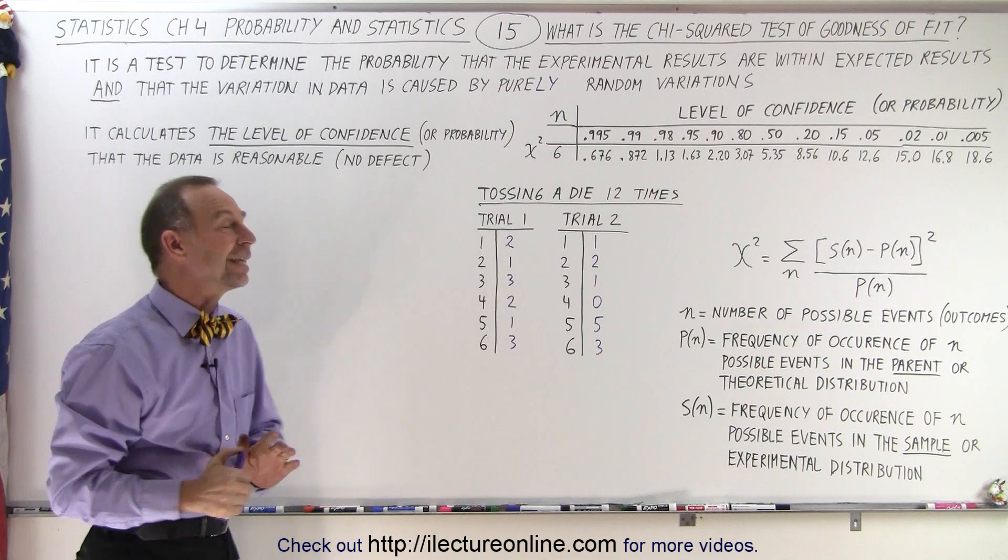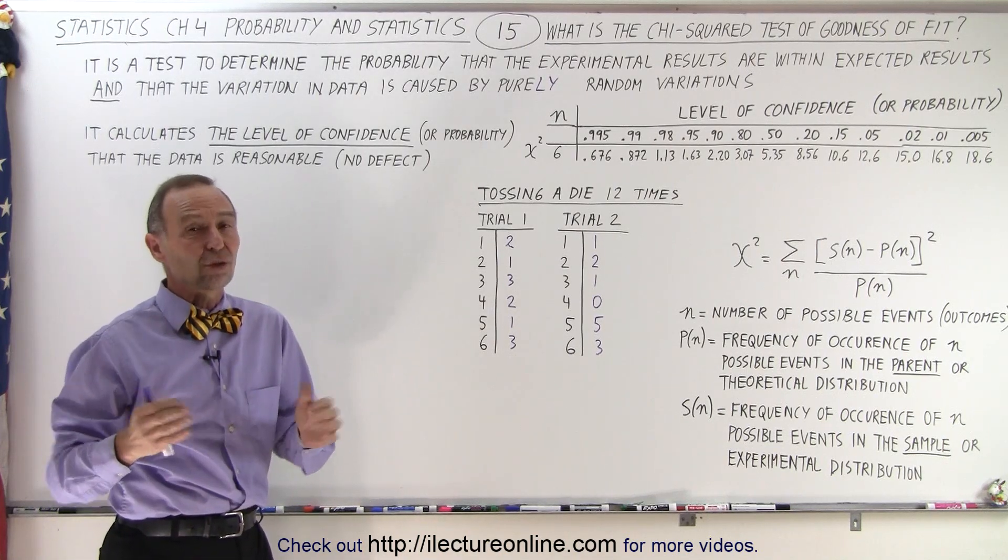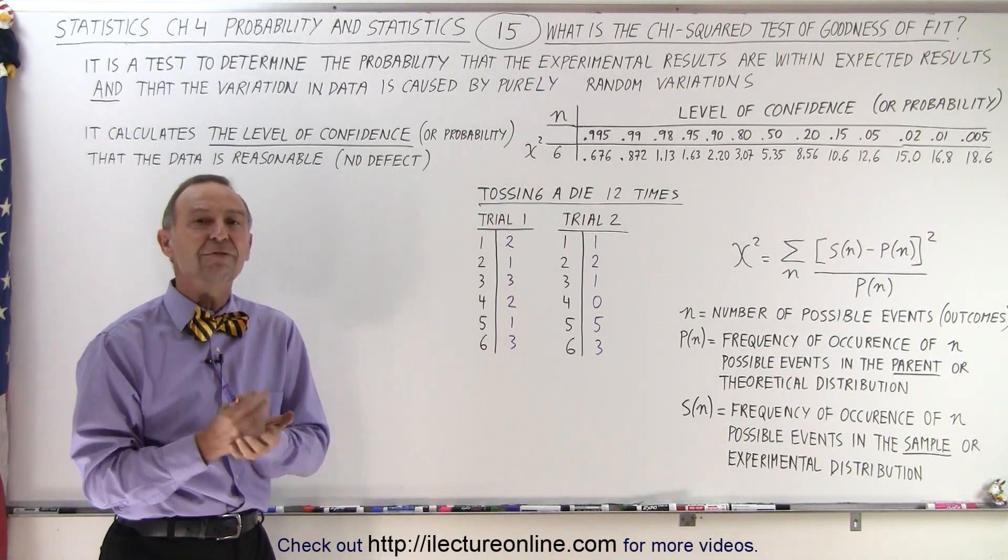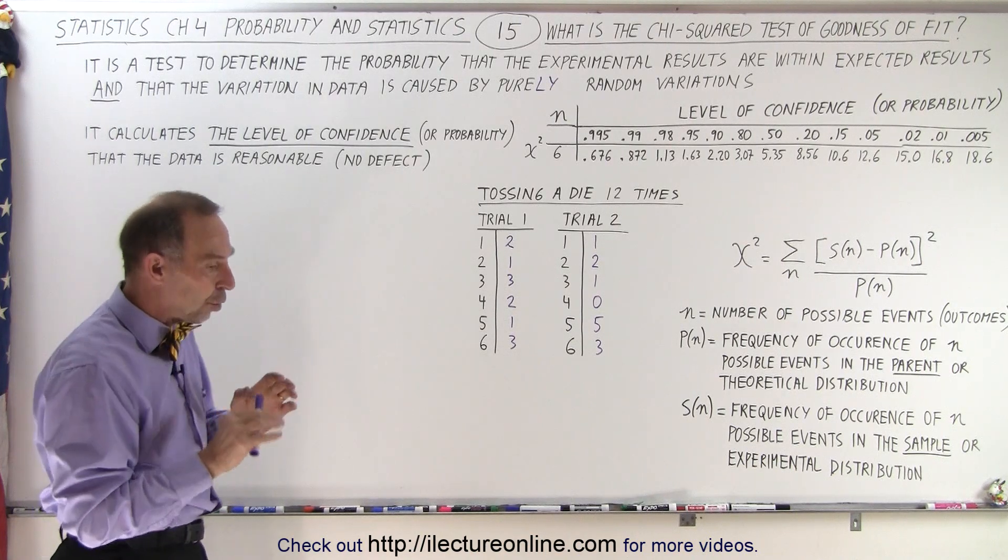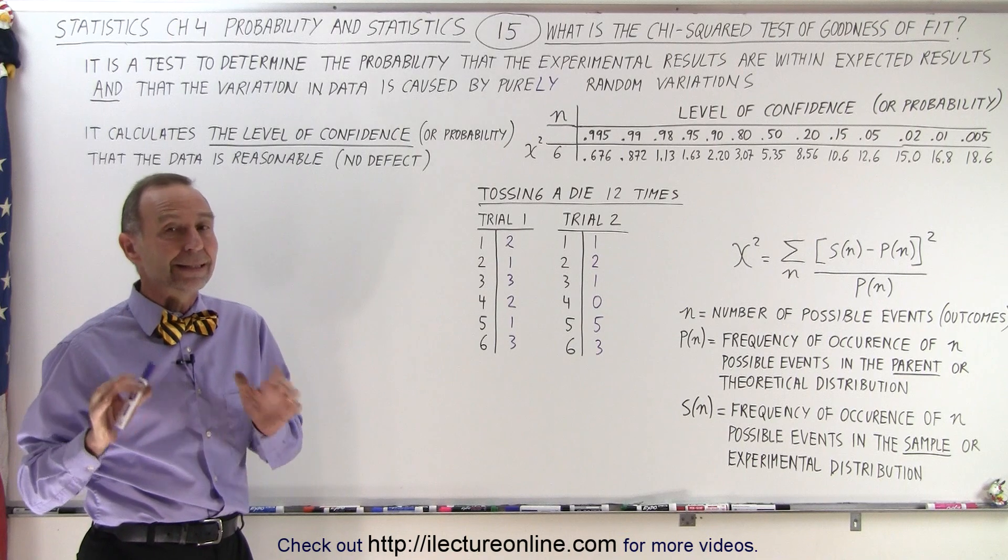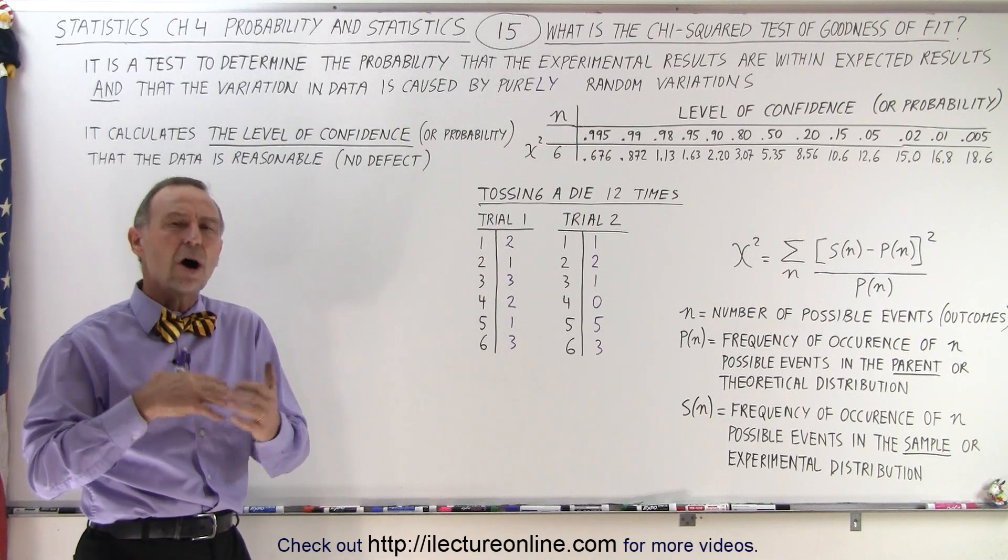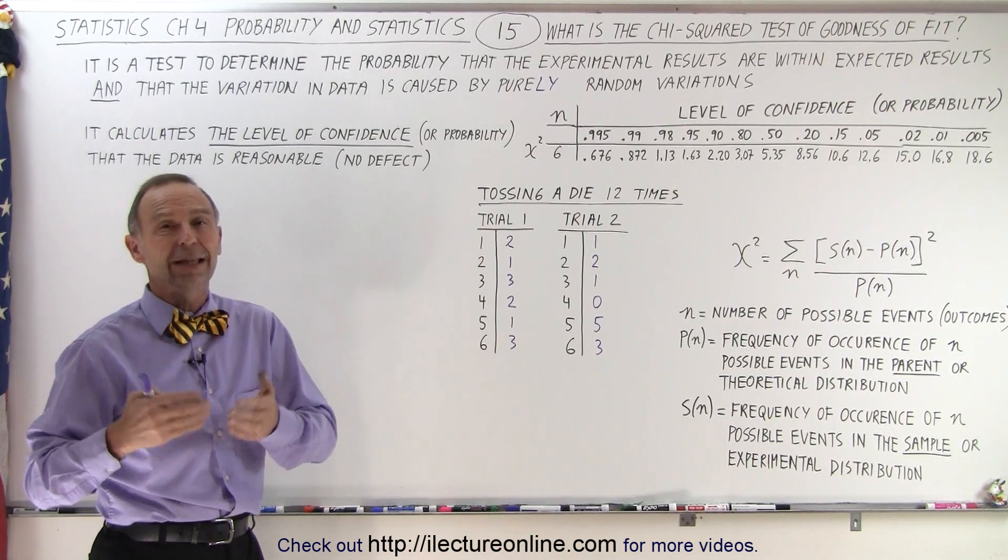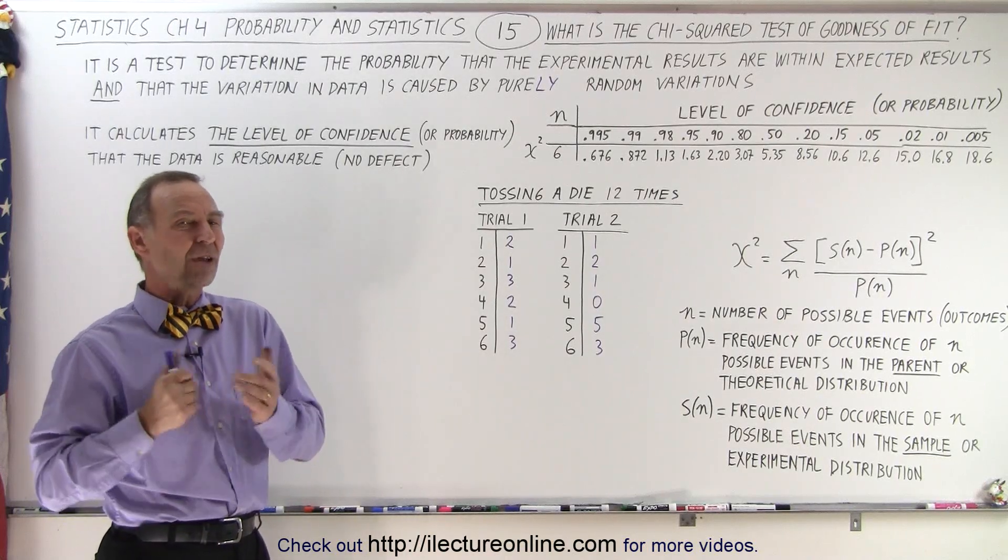Purely random variations. And that's the key. In normal circumstances, we expect random variations because of all the potential influences that could affect the data. So if the data varies purely randomly, then we're dealing with good data. If the data varies in an odd way where we don't expect that, where it moves away from what we would call the theoretical probabilities, then we're dealing with bad data.